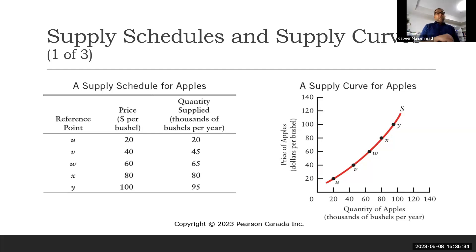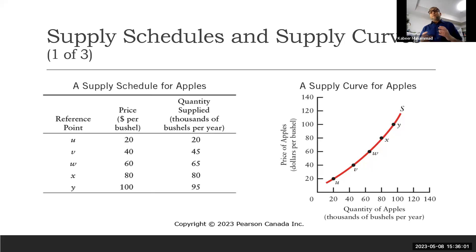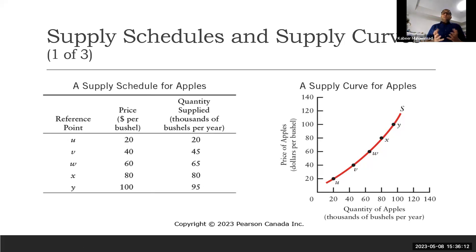We see here the price of apples and quantity supplied. As the price is increasing, the quantity supplied is also increasing — prices of 20, 40, 60, 80, 100, and quantity supplied increasing from 20 to 45 to 65 to 80 to 95. When we present this data with the help of a curve, we call it a supply curve. Since the relationship between these two is positive, we find an upward sloping supply curve. This upward slope reflects that when one variable is increasing, the other variable is also increasing.